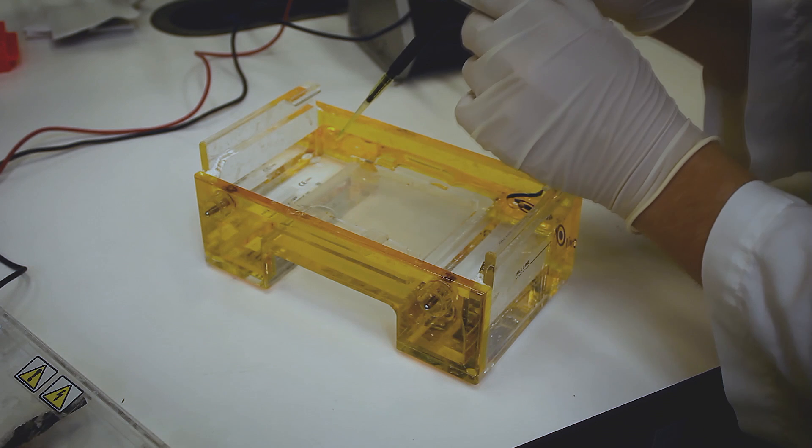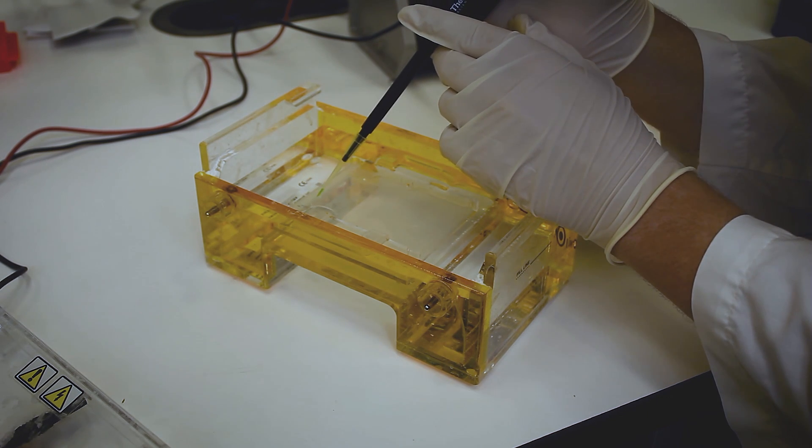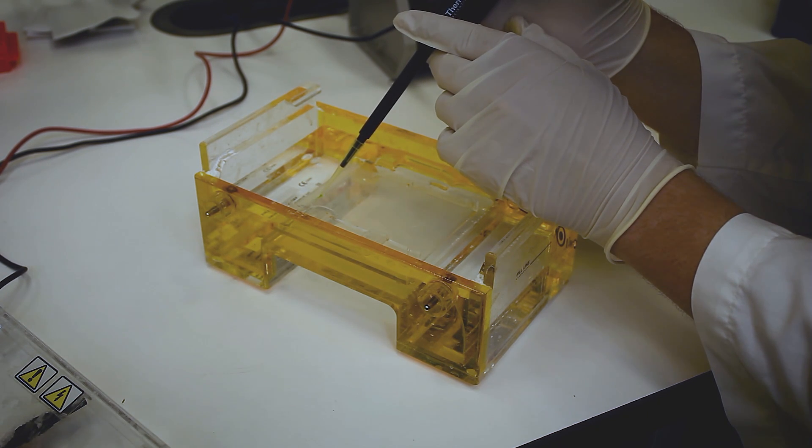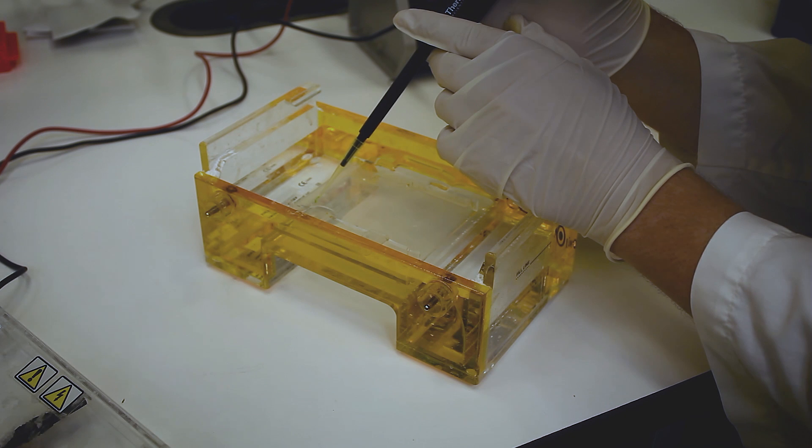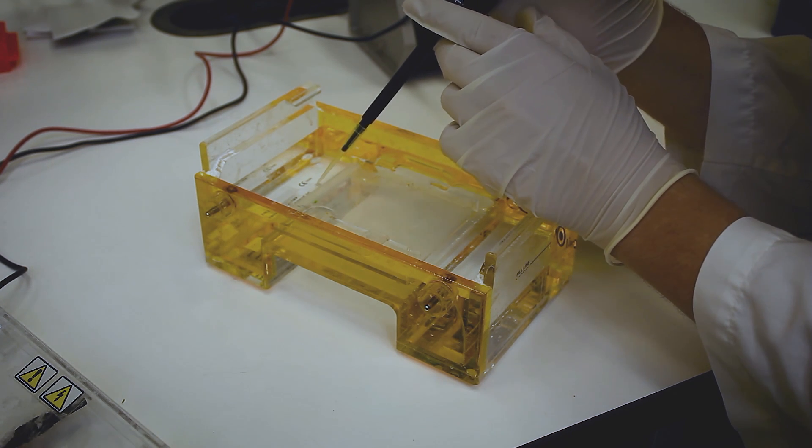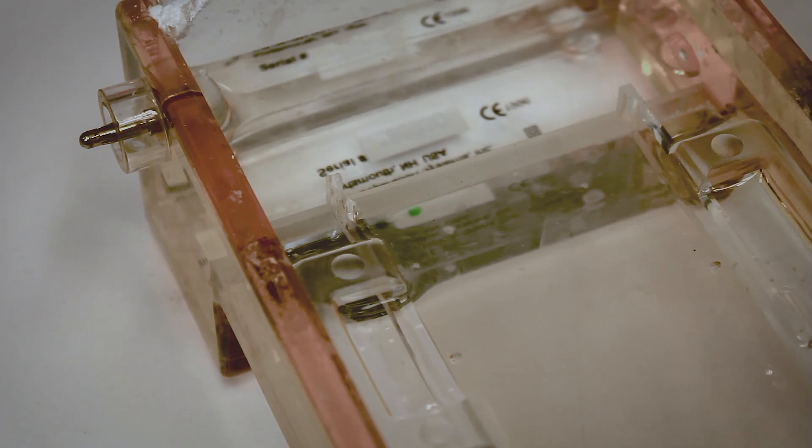GoTaq Green already contains loading dye so you do not need to add loading dye to the DNA. If your PCR product is missing loading dye, add 2 microliters of loading dye to 3 microliters of each PCR product.